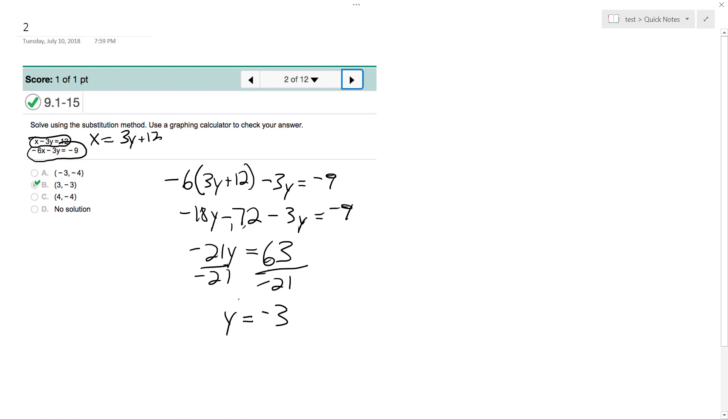Okay, so since we got y is equal to negative 3, I know I already have the solution posted here, but I'm just solving this to show you. So y is equal to negative 3. All I can do, it doesn't matter which one I pick, I can just plug in y. So I'll plug in the first one.